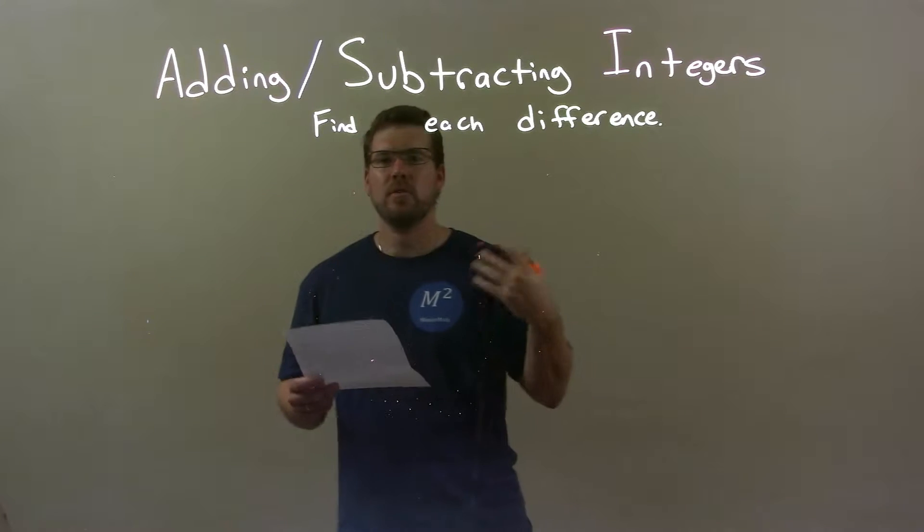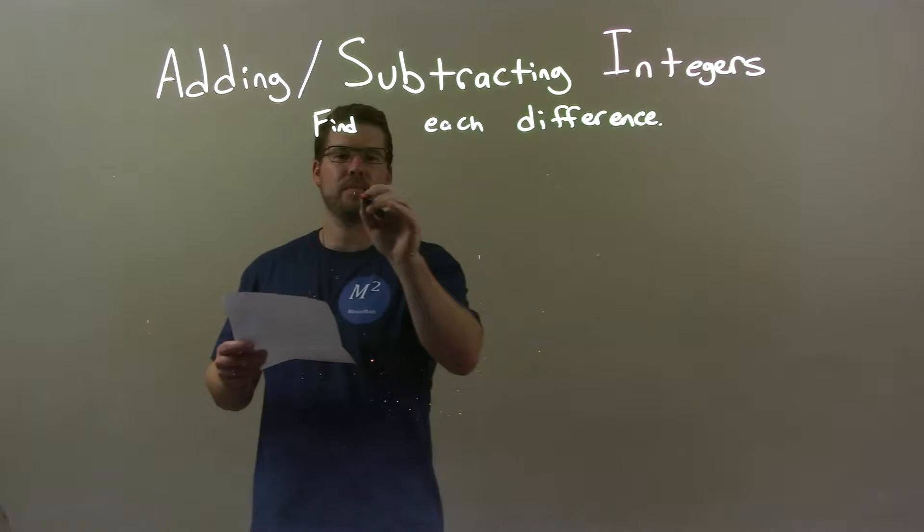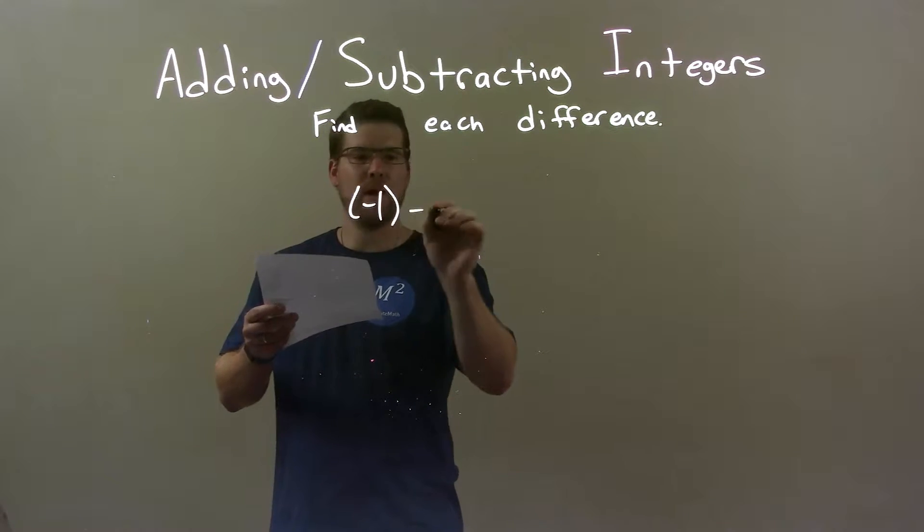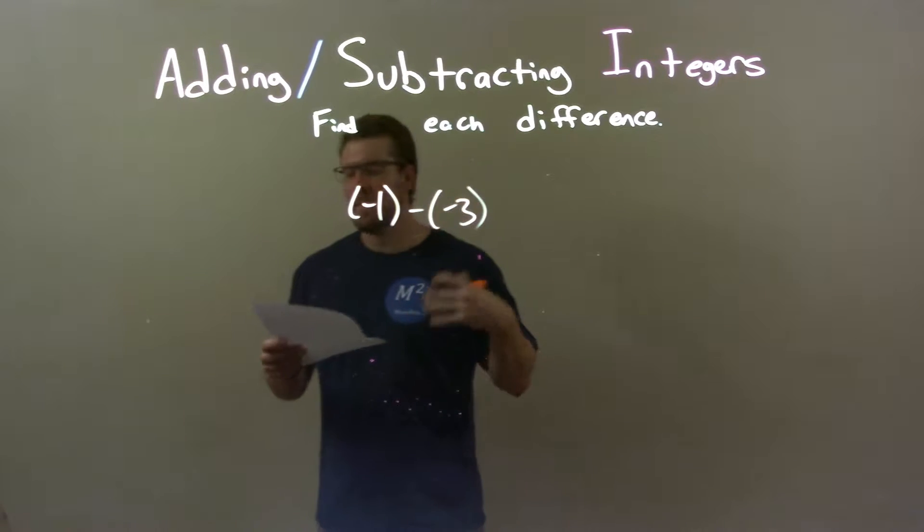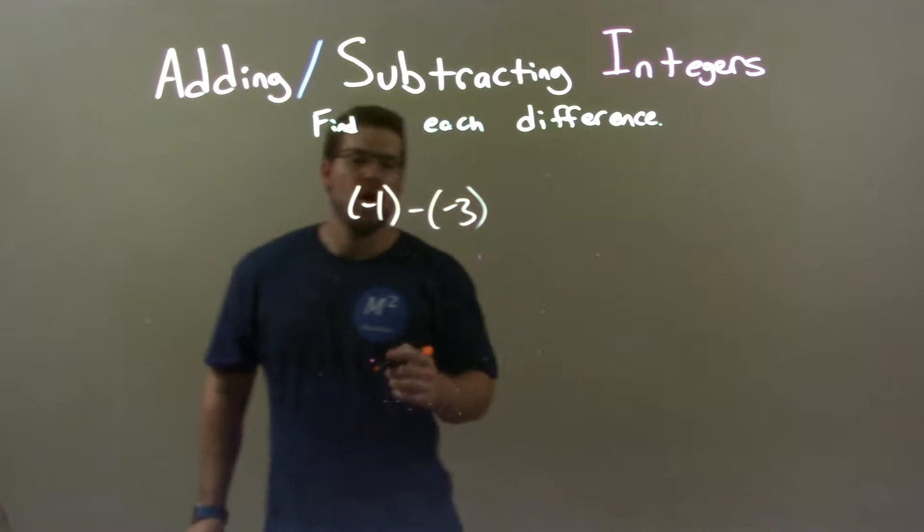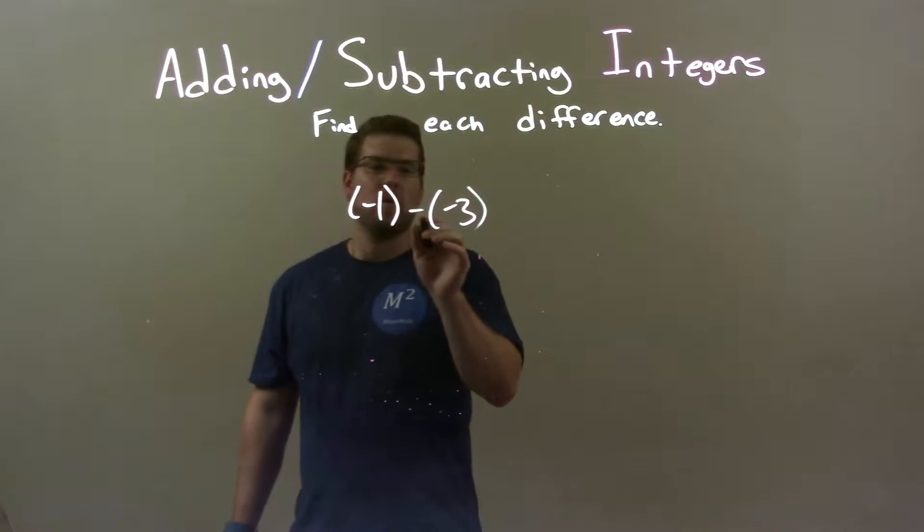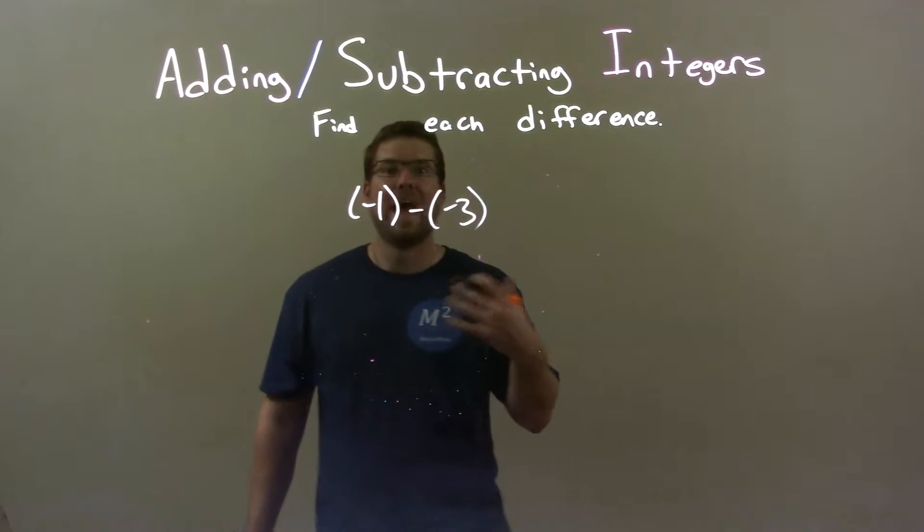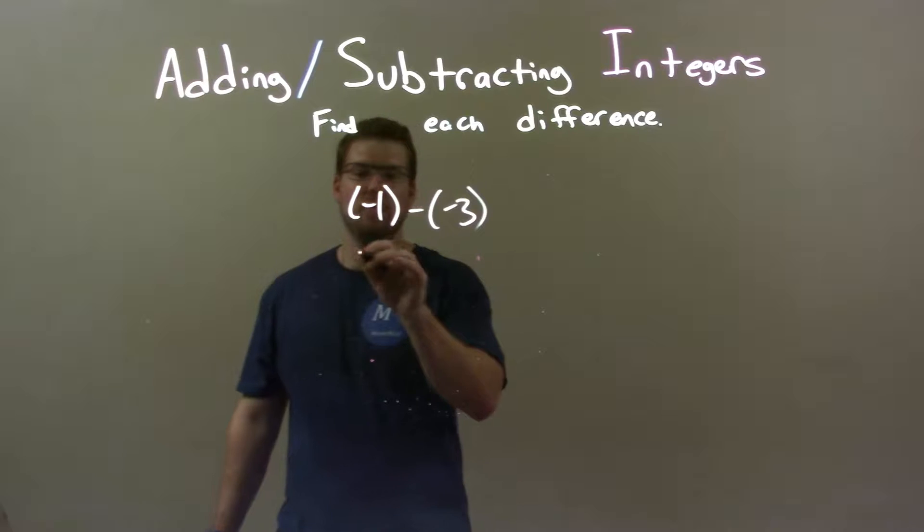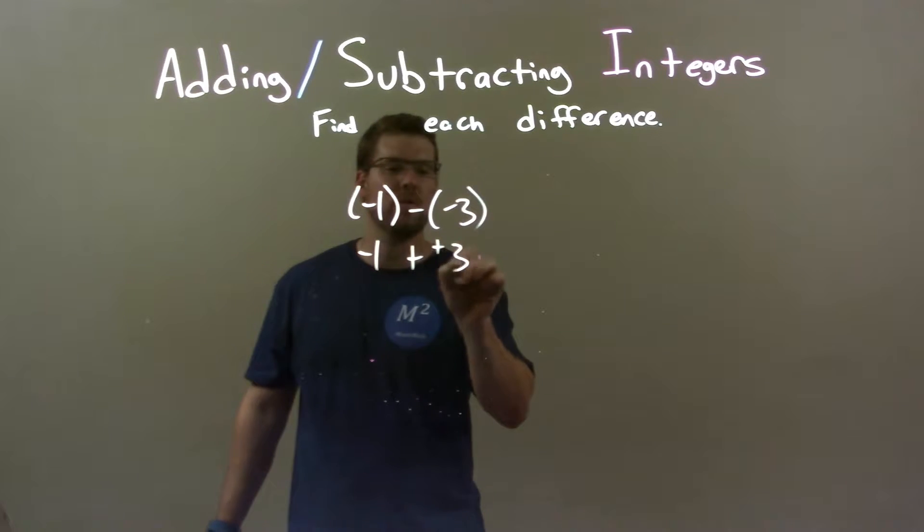If I was given these integers, negative 1 minus a negative 3. So, negative 1 minus a negative 3. We know that subtracting a negative 3 is the same thing as adding a positive 3. So, we have negative 1 plus a positive 3 right here.